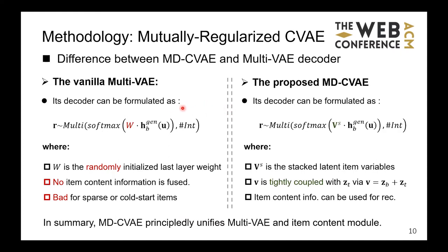We generate item content x from the corresponding item content embedding and represent the generative model by the joint distribution of all observed and latent variables. The main difference between the baseline Multi-VAE and our MD-CVE is that the last layer of Multi-VAE is randomly initialized and optimized based on historical user ratings, so it contains no item content information — which is problematic for items with sparse interactions or cold-start items. In our model, the last layer weights are stacked latent item variables tightly coupled with item content embeddings, so auxiliary item content information can be incorporated to support recommendations.